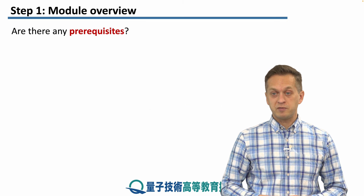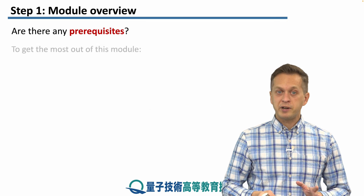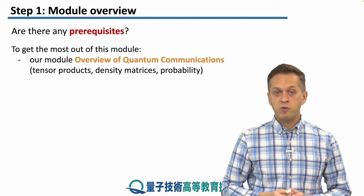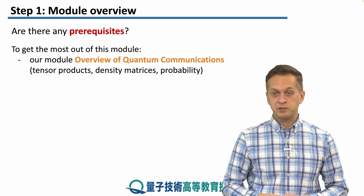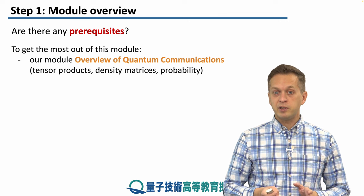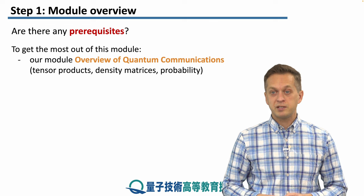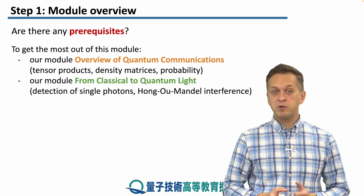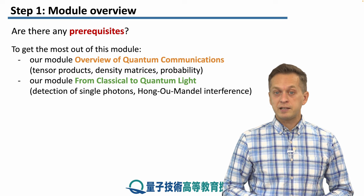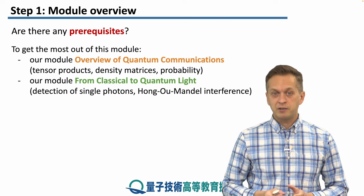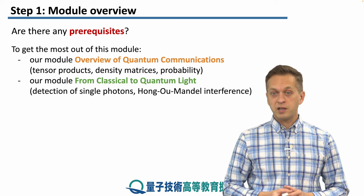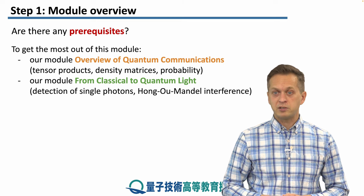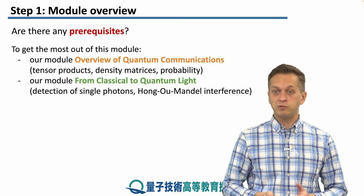Are there any prerequisites for our course? There are, but they're quite mild. We recommend, in order to get the most out of this course, that you go over our module on the overview of quantum communications — particularly that you're familiar with the notions of tensor products, density matrices, and some simple probability theory. Also, it will be very useful if you go over our module on from classical light to quantum light, particularly about detection of single photons and Hong-Ou-Mandel interference, which are very crucial when we talk about link architectures and the hardware that goes into quantum networks and the quantum internet.